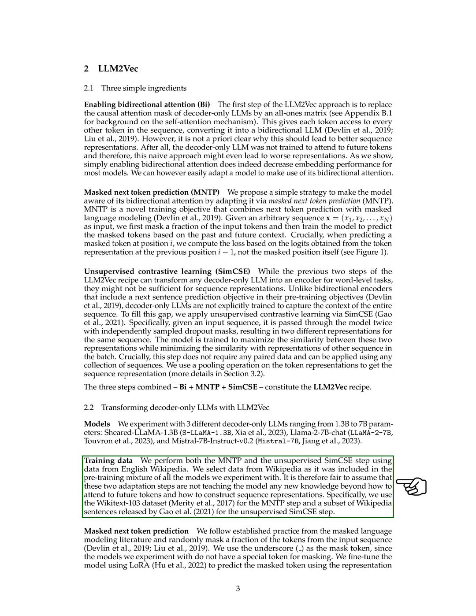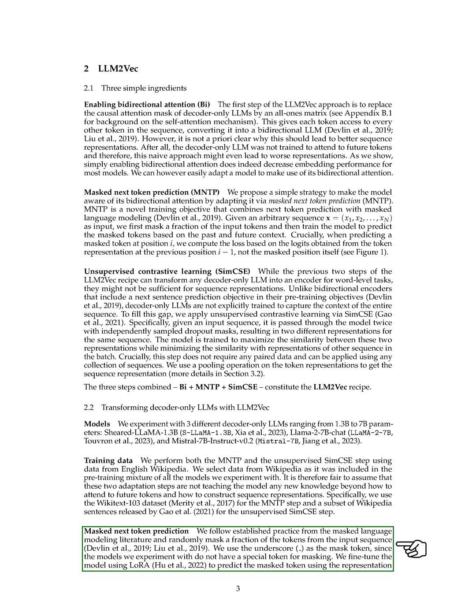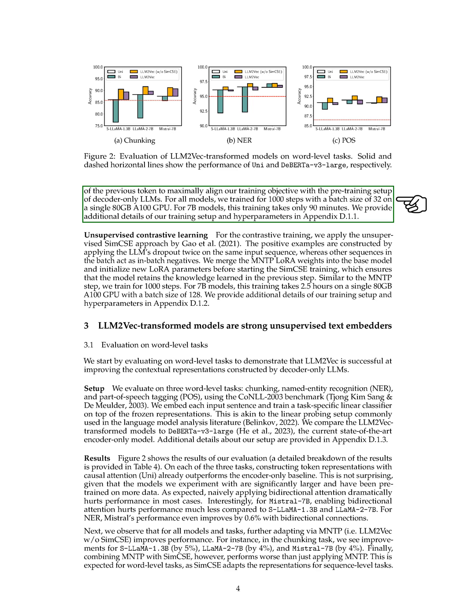For training data, we utilized English Wikipedia for both the MNTP and SIM-CSE steps. The MNTP step used the Wikitext-103 dataset, while a subset of Wikipedia sentences was used for the unsupervised SIM-CSE step. In the masked next-token prediction step, we randomly masked some tokens in the input sequence and fine-tuned the model using LoRA to predict the masked token based on the representation of the previous token. We trained the models for 1,000 steps with a batch size of 32 on a single 80GB A100 GPU, taking 90 minutes for 7b models.